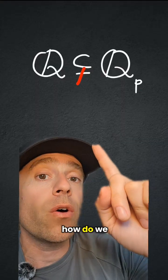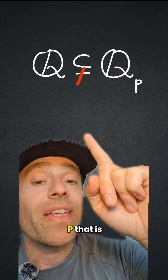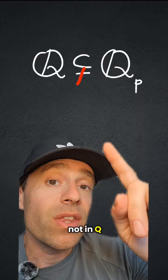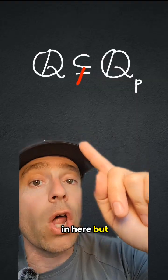In other words, how do we know that there are elements in Q_p for any prime p, there is an element in Q_p that is not in Q? In this video, I'm going to construct several such elements that are in here, but not in Q.